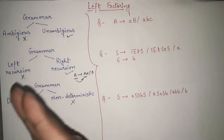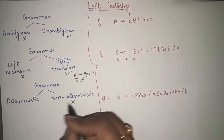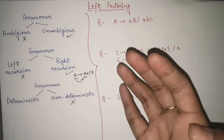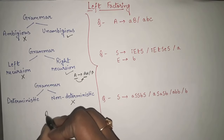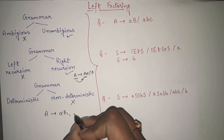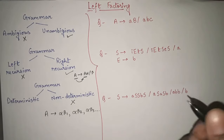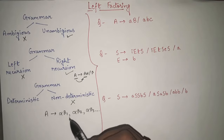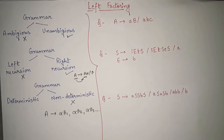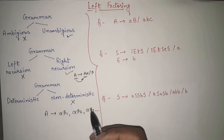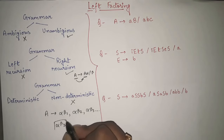For example, consider A → αβ1 | αβ2 | αβ3 and so on. This is an example of non-deterministic grammar. I am showing you why non-deterministic grammar is not preferred by parsers. Suppose you want the production αβ3. First, you will try to match this first α — alpha is matched. Then you compare β1, but you want β3, so β1 does not match.